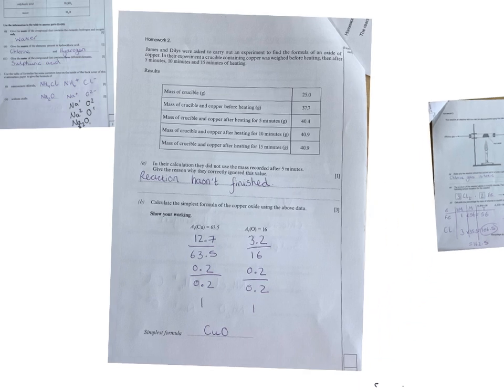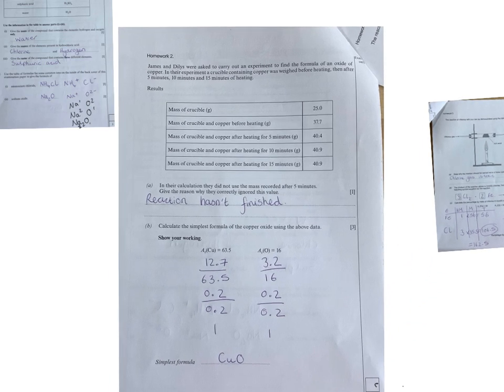Second question then in your homework booklet. James and Dillis are asked to carry out an experiment to find the formula of an oxide of copper. In the experiment, a crucible containing copper was weighed before heating and then after five minutes, ten minutes, and fifteen.